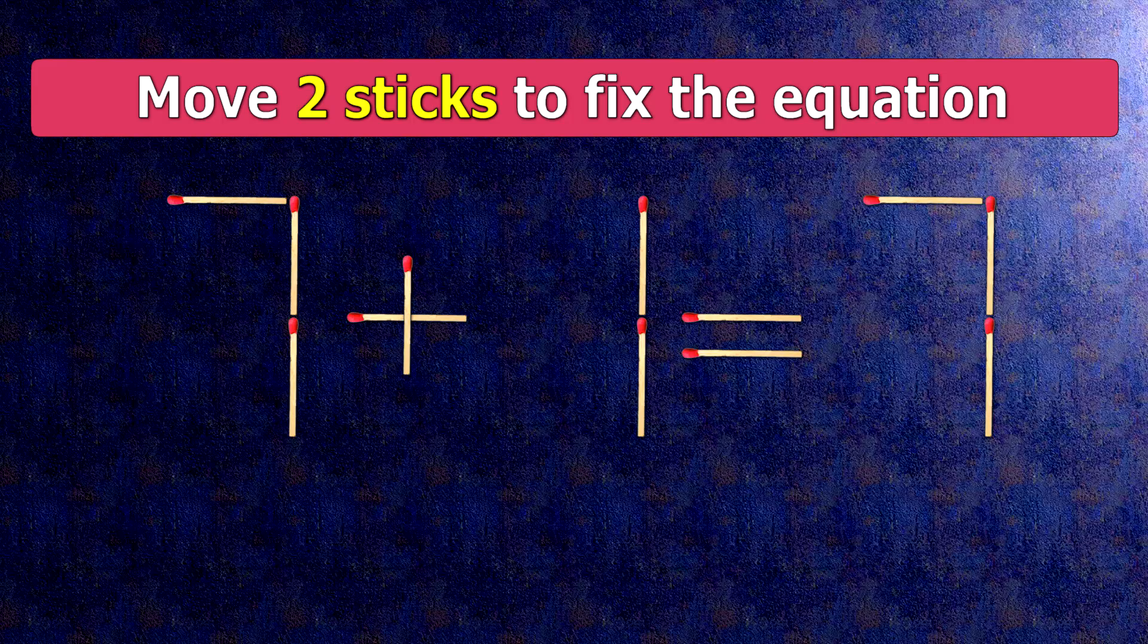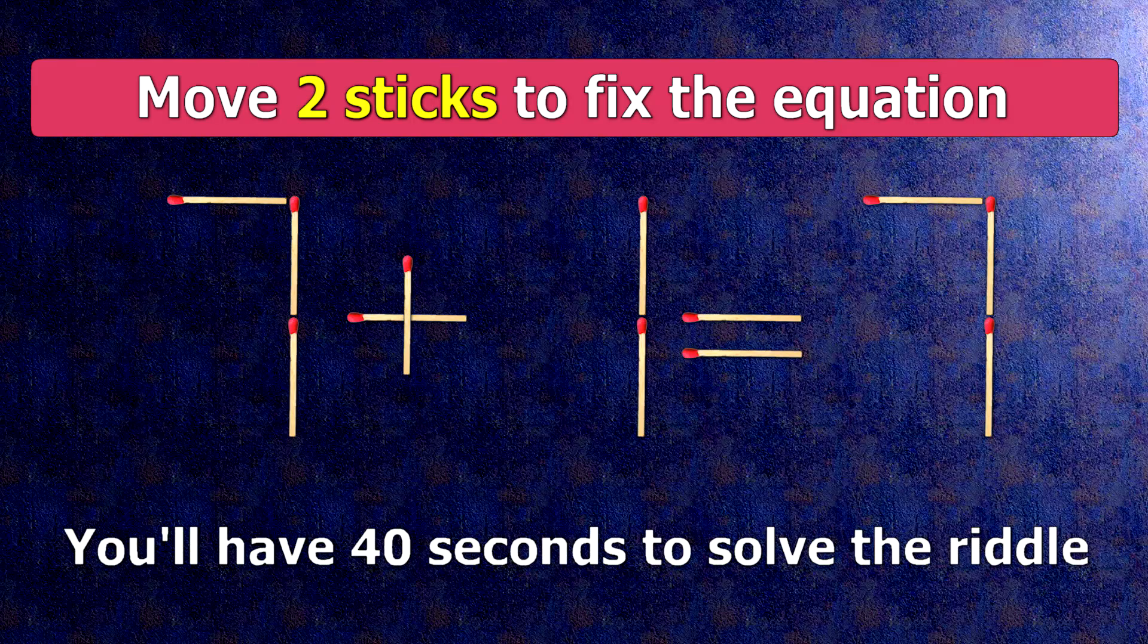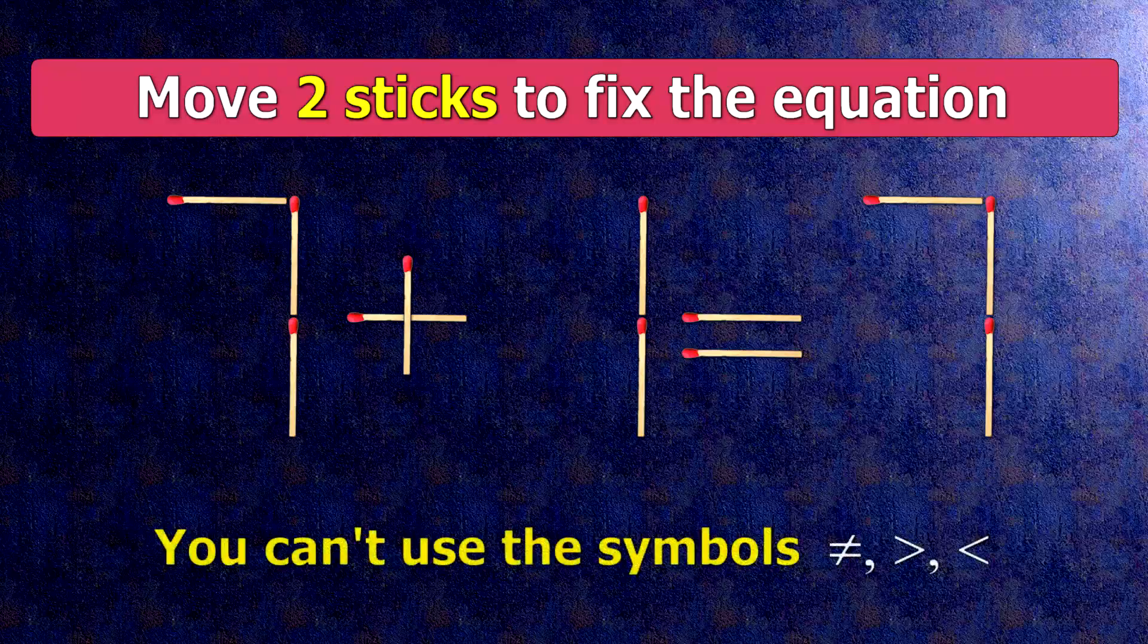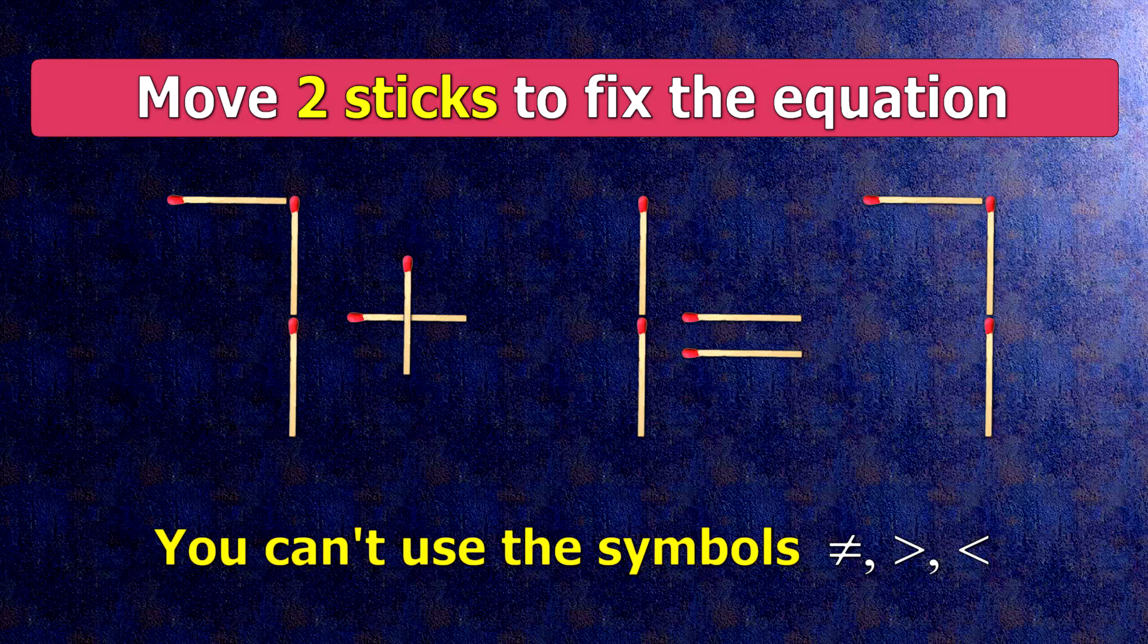We have the equality 7 plus 1 equals 7. Our equality is wrong. We need to move two matches to make our equality correct.